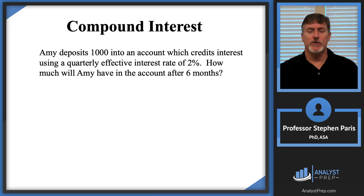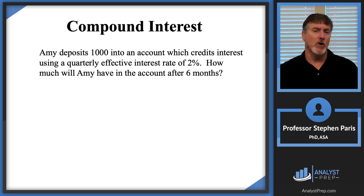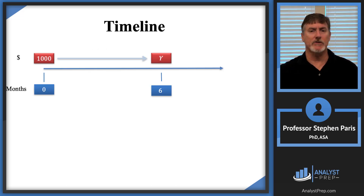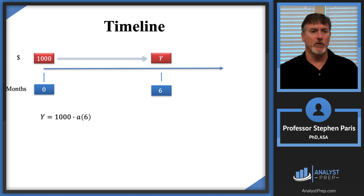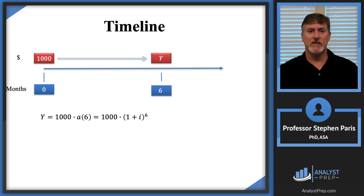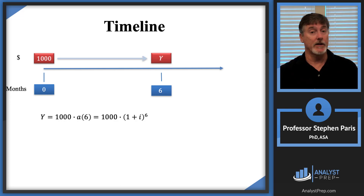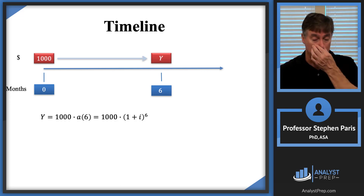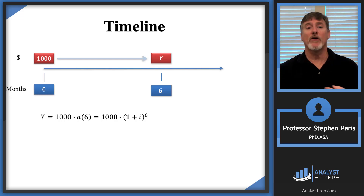First example: Amy deposits $1,000 into an account which credits interest using a quarterly effective interest rate of 2%. The question is how much will Amy have in the account after six months? A natural timeline would show $1,000 deposited at time zero, and the accumulated value Y equals 1,000 times a(6), where a(6) = (1 + i)^6 because we're compounding interest.